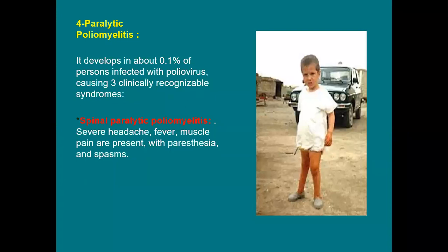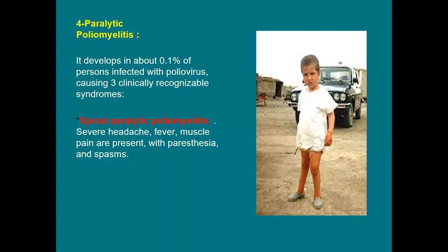The most serious type is paralytic poliomyelitis, which occurs in only about 0.1% of persons infected with poliovirus. The clinical manifestation depends on which site is affected, and we can recognize three clinical types. The most common is spinal paralytic poliomyelitis, involving the anterior horn cell, the origin of the peripheral nerve.